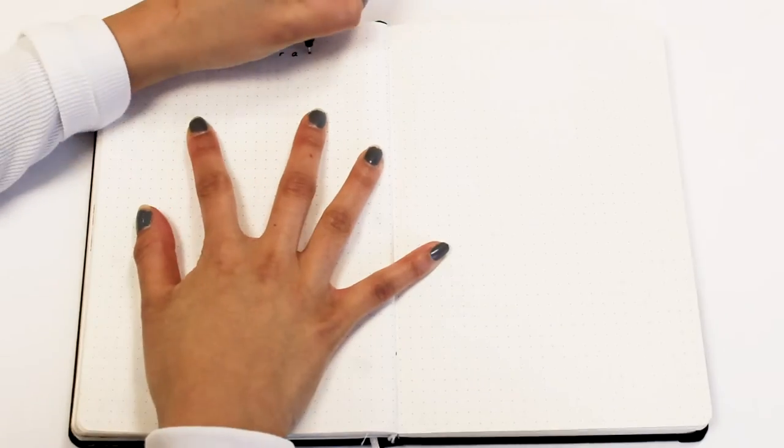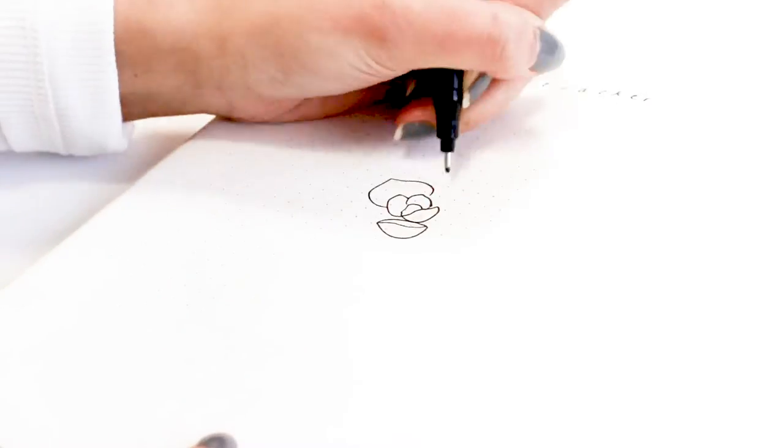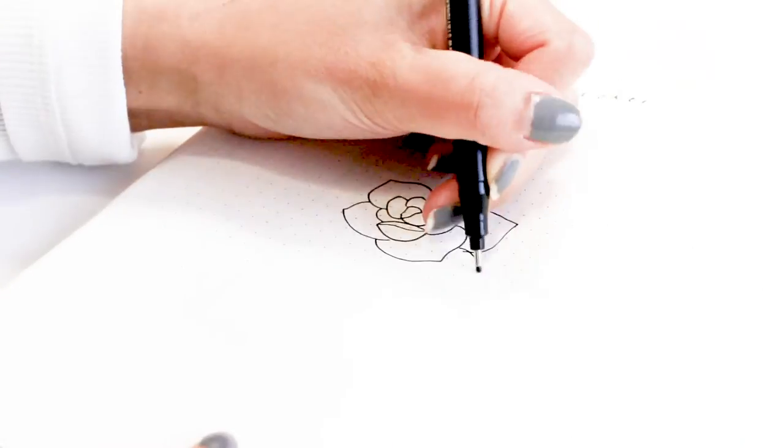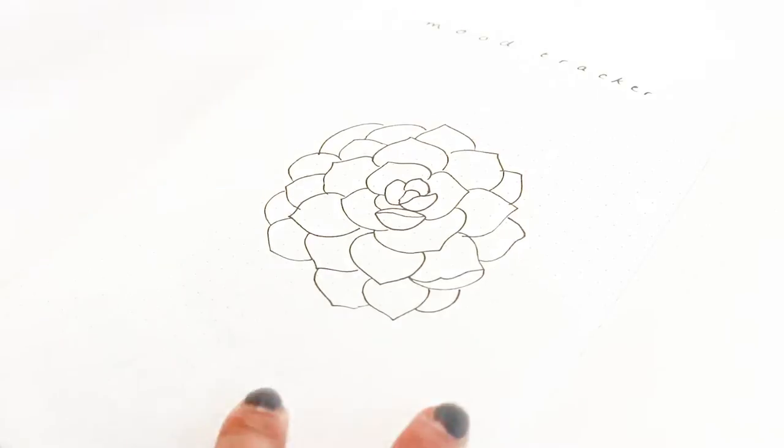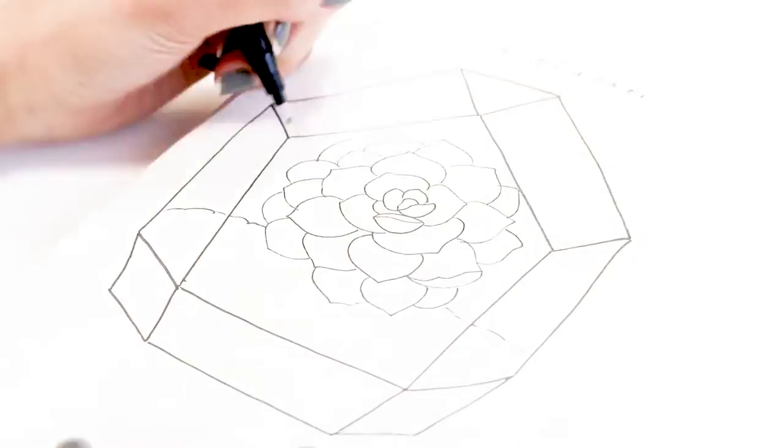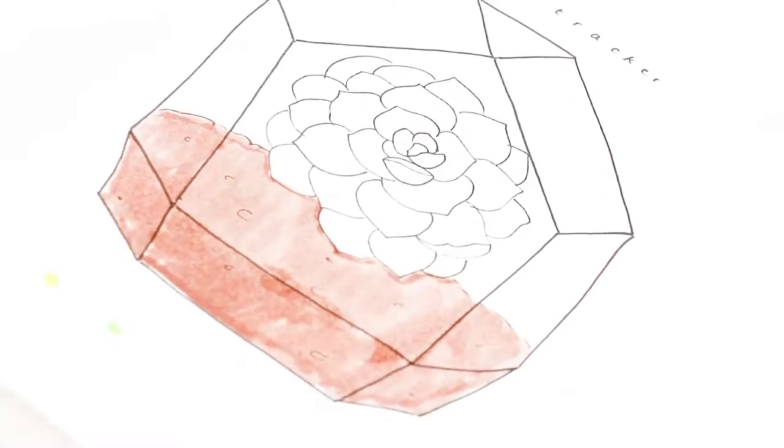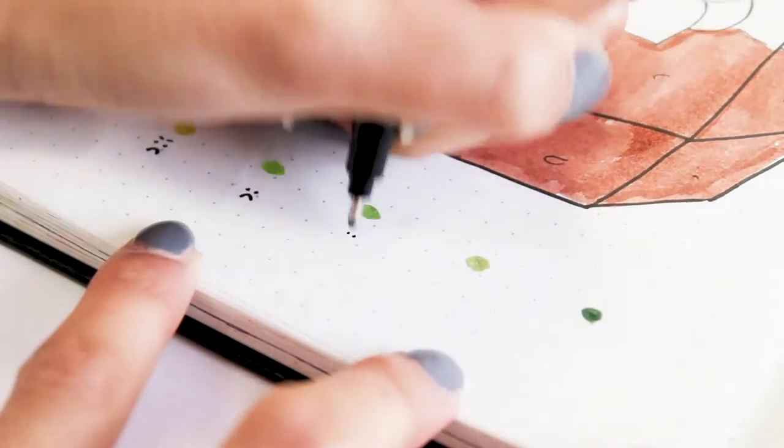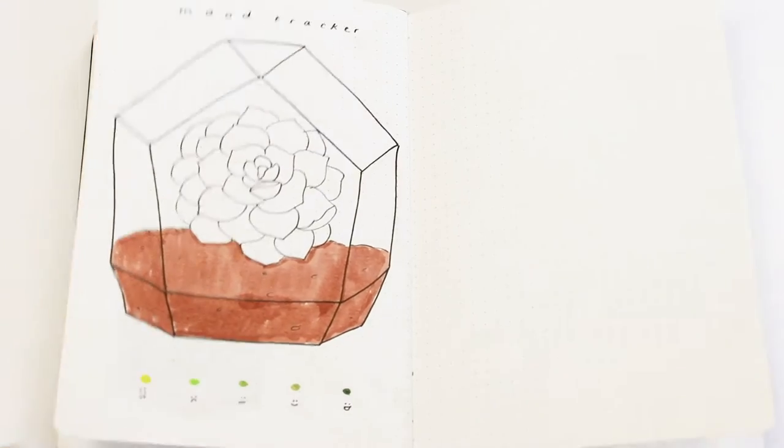Next is the mood tracker. For this I decided to draw a massive succulent in a terrarium because I love how they look, and it's pretty self-explanatory. You just shade in one petal with a color that suits your mood best. So I have this little legend at the bottom to signify what color goes with what mood.